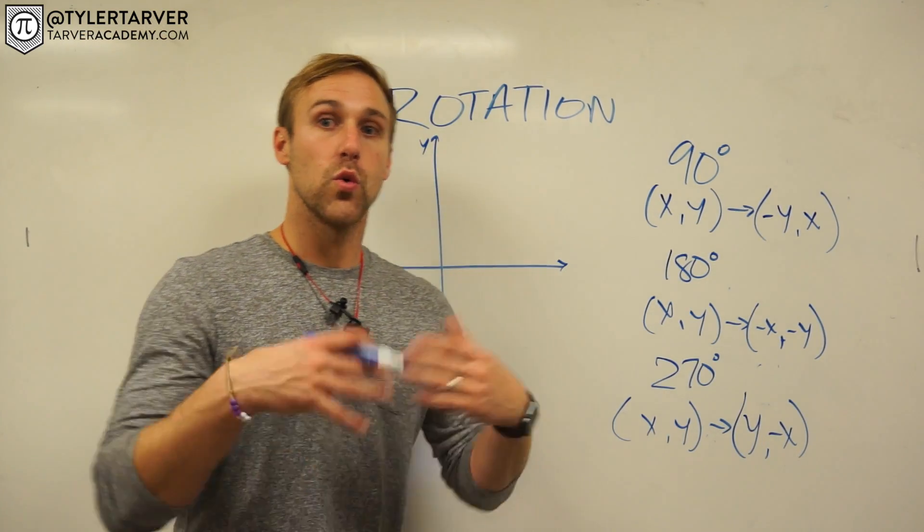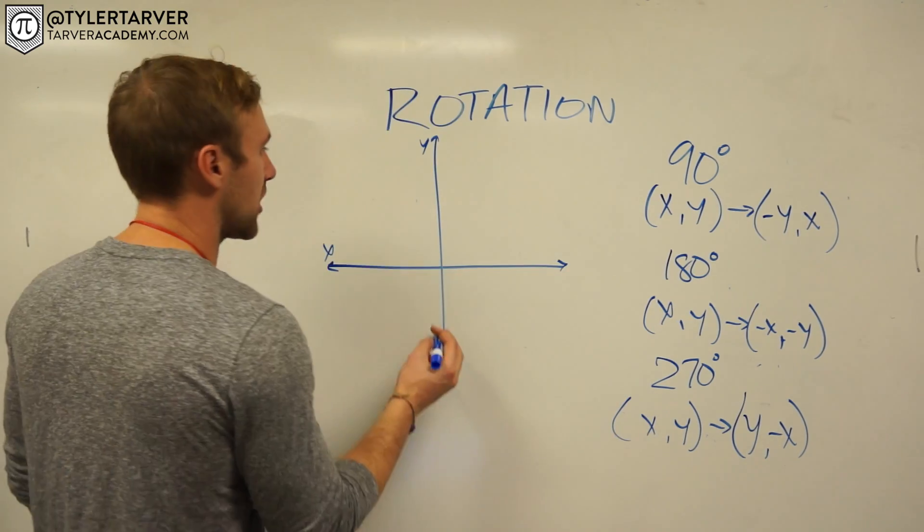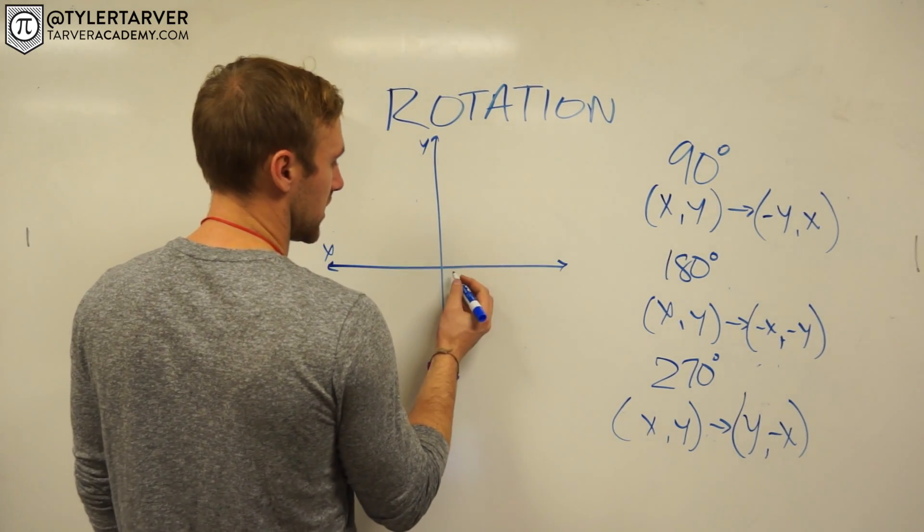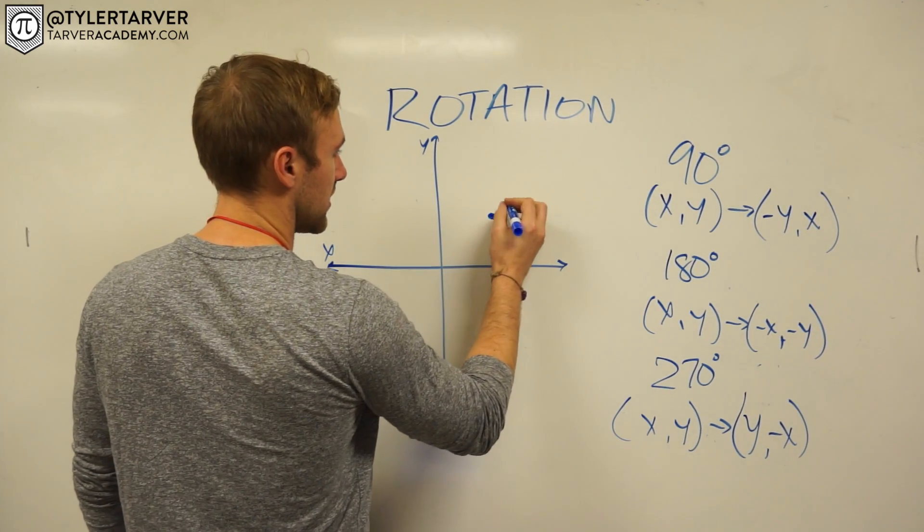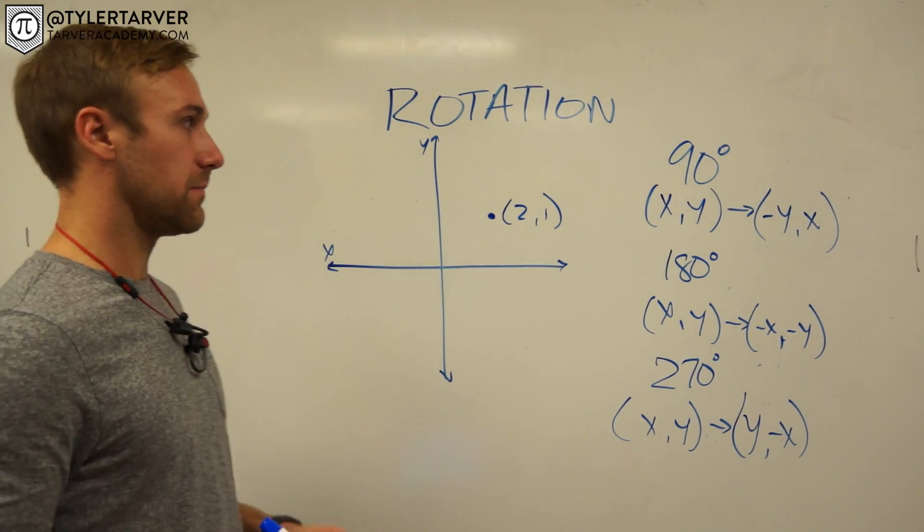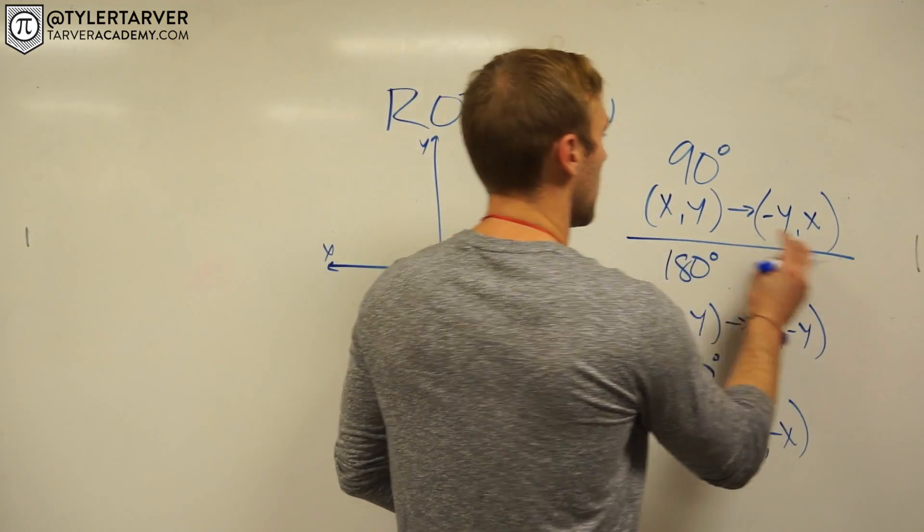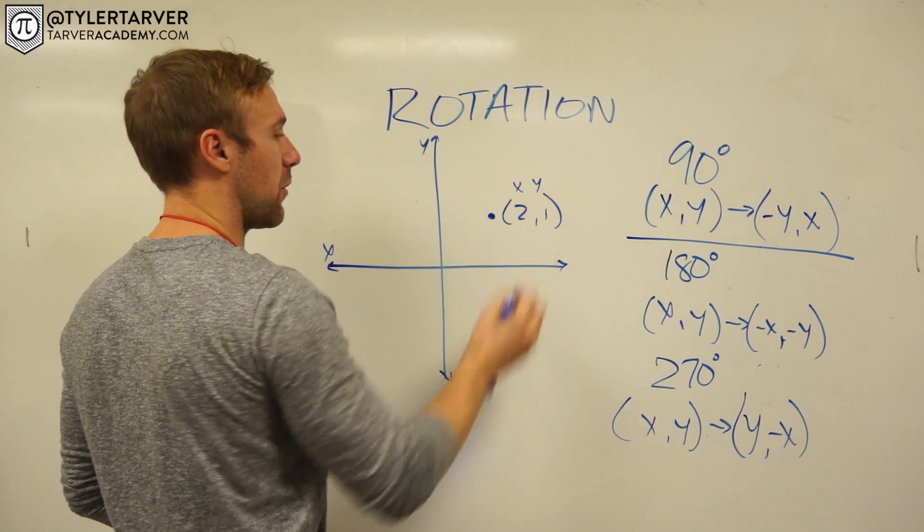So I want to show you how to rotate when it comes to geometry. Let's look at a point. Let's say we've got the coordinate. We go over two, up one, so we're at (2,1). That's our starting coordinate. Now let's say first I want to rotate it 90 degrees. Two is my x, one is my y.